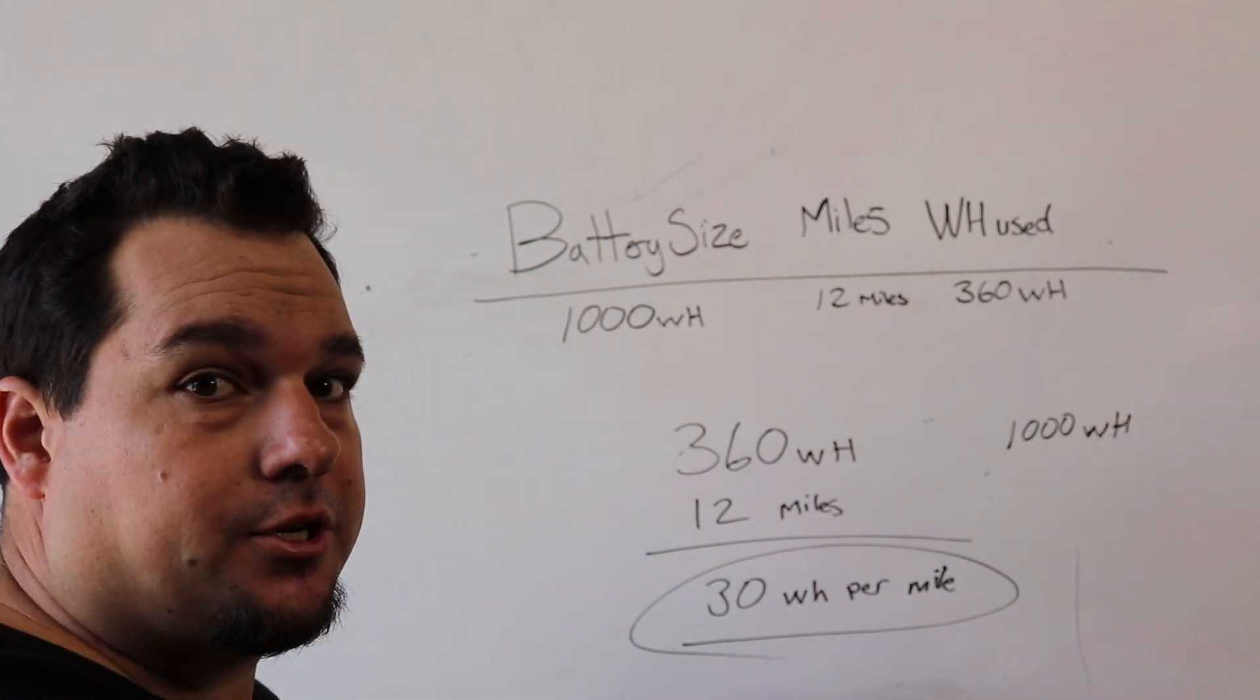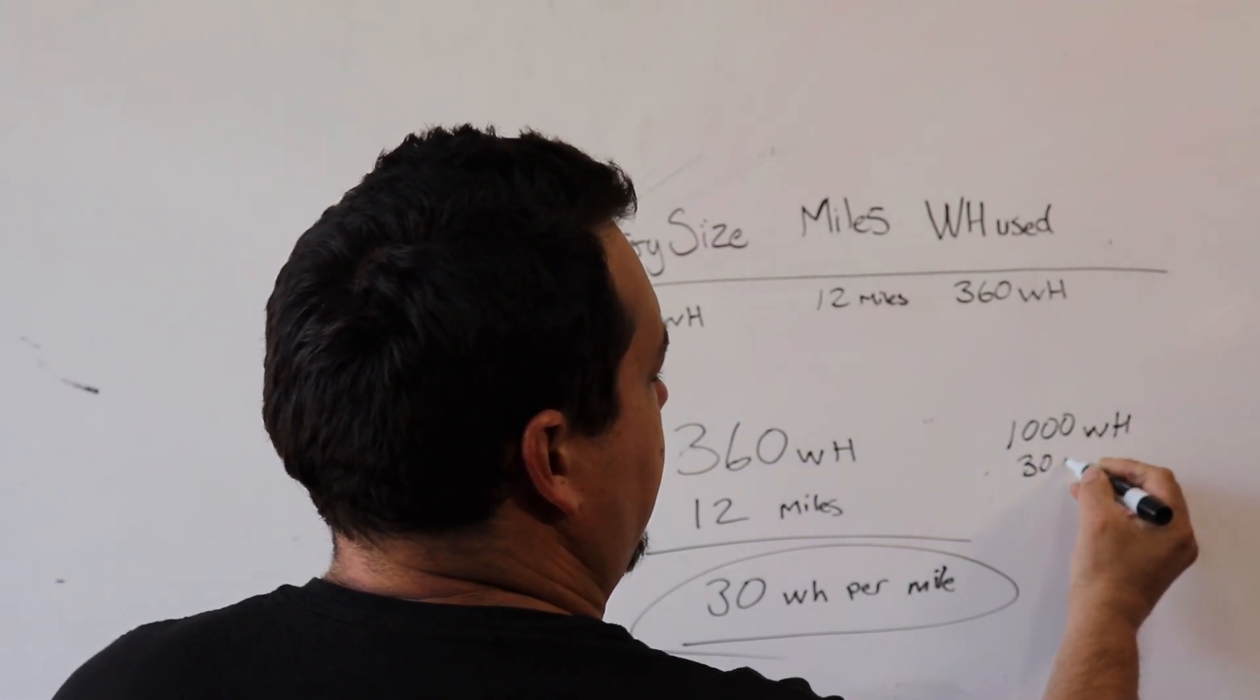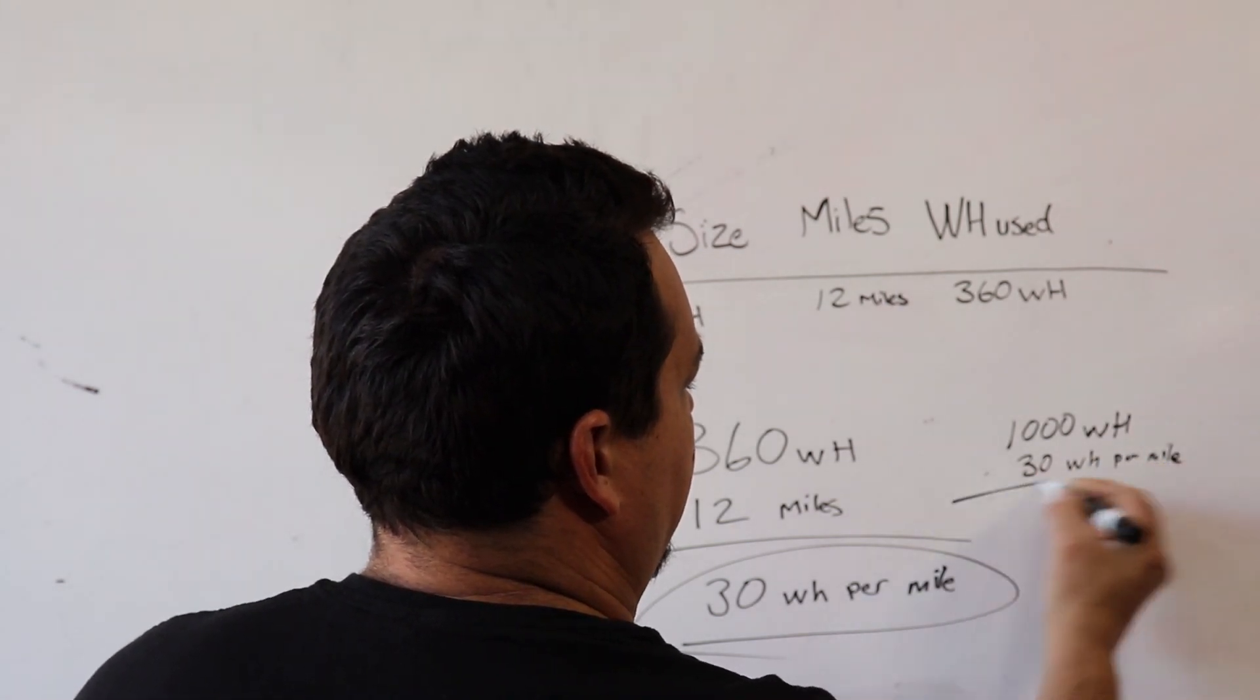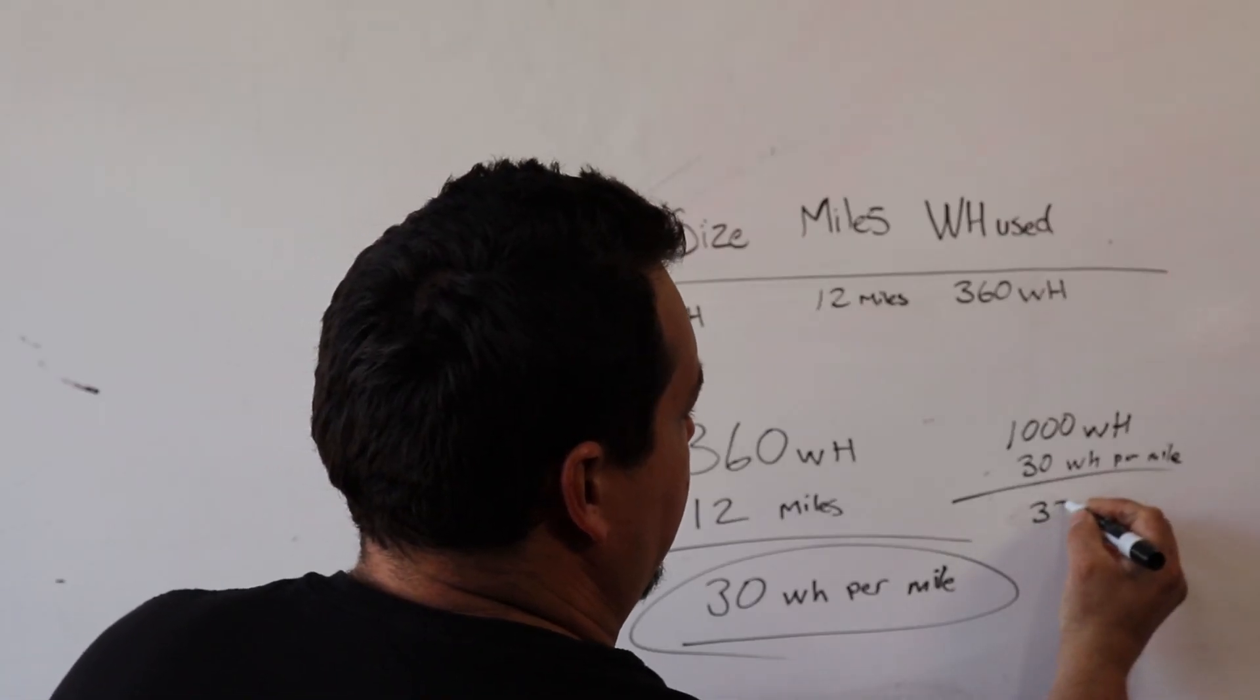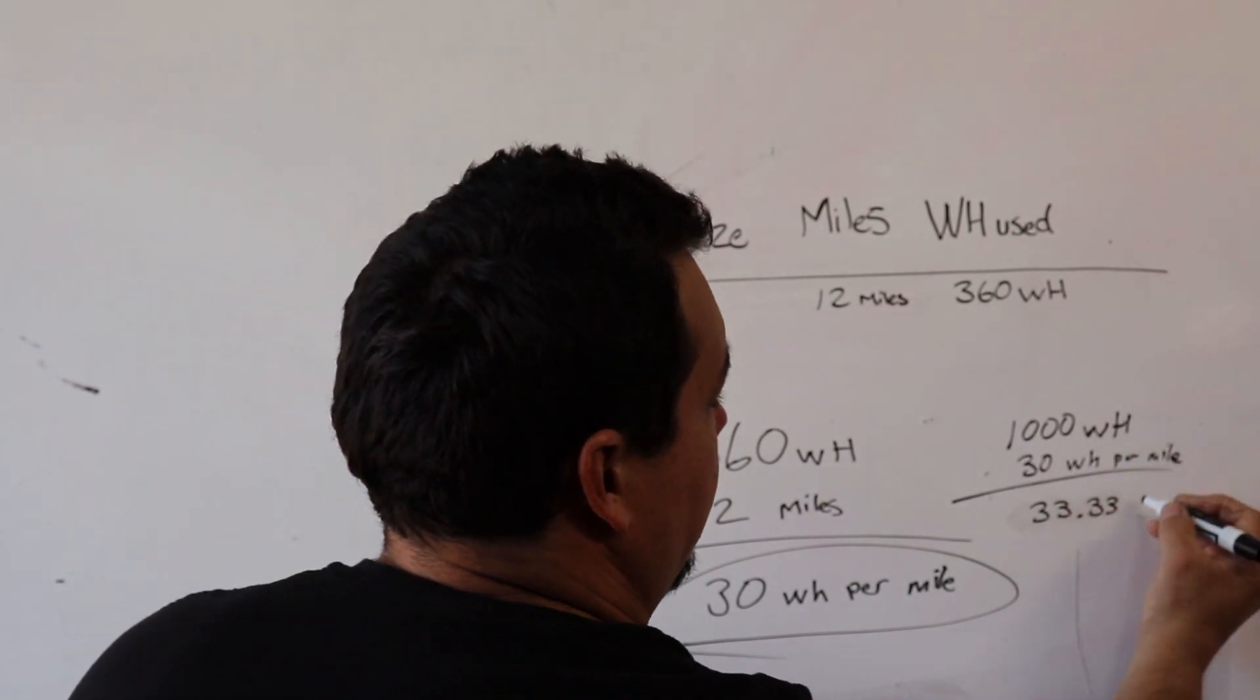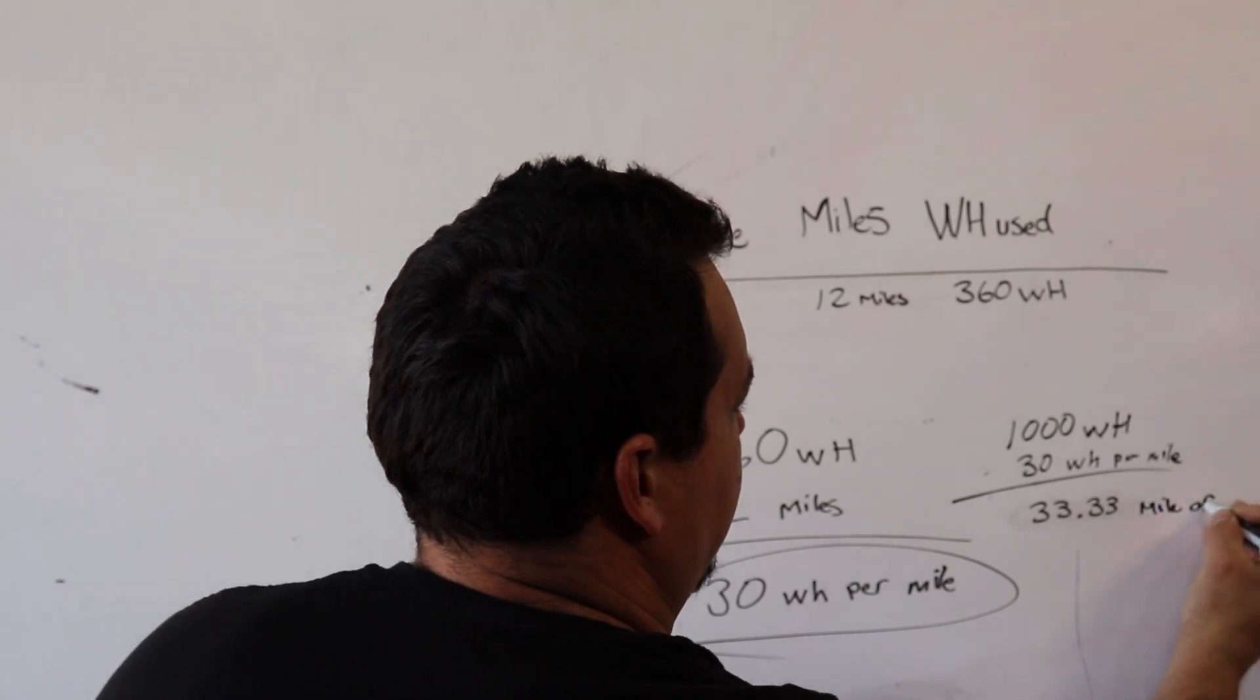Divided by our 30 watt hours per mile. And we end up with 33.33, that'll continue forever, miles of range.